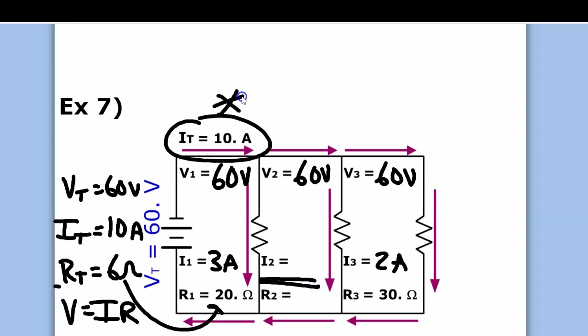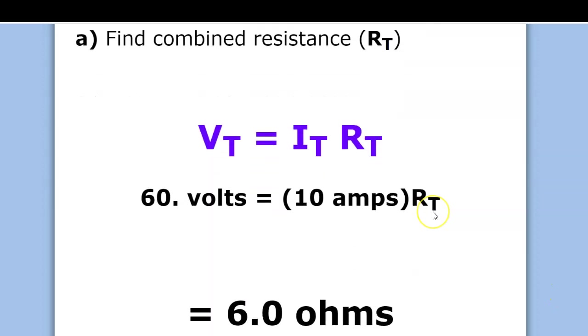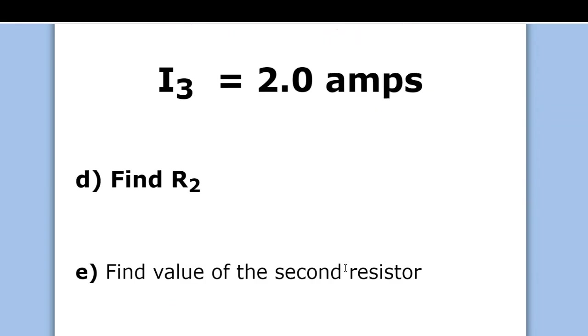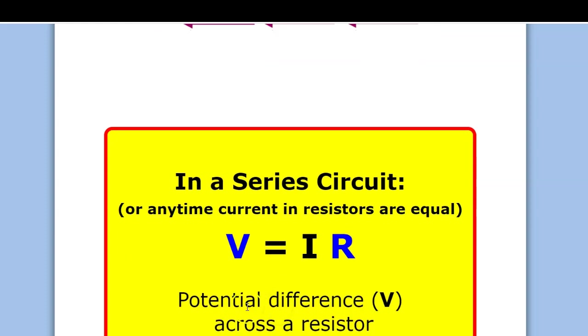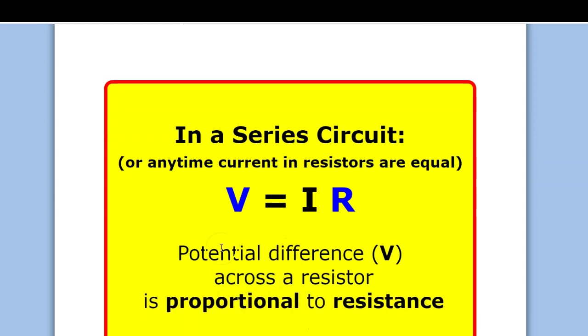The middle branch current I2 can be found because the total is 10 amps and the other two branches are 3 and 2 amps, equaling 5. So the middle branch is 5 amps — because 5 plus 2 is 7, and 7 plus 3 is 10. Now R2 can be found using V2 equals I2 times R2. In a series circuit, voltage is directly proportional to resistance because the currents are equal — twice the resistance means twice the voltage drop.